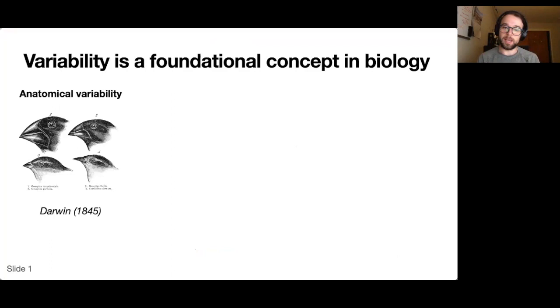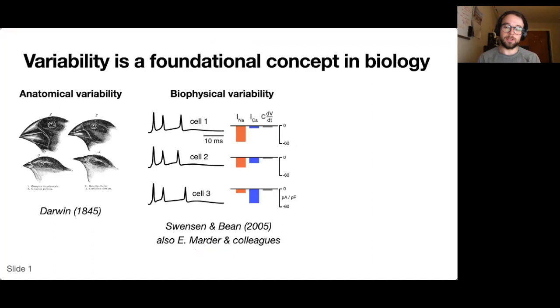In neuroscience, some of the best-known work on variability has been done at the level of single-cell biophysics. Here I'm showing you recordings from three Purkinje neurons with similar firing properties, but which have vastly different sodium and calcium current densities.